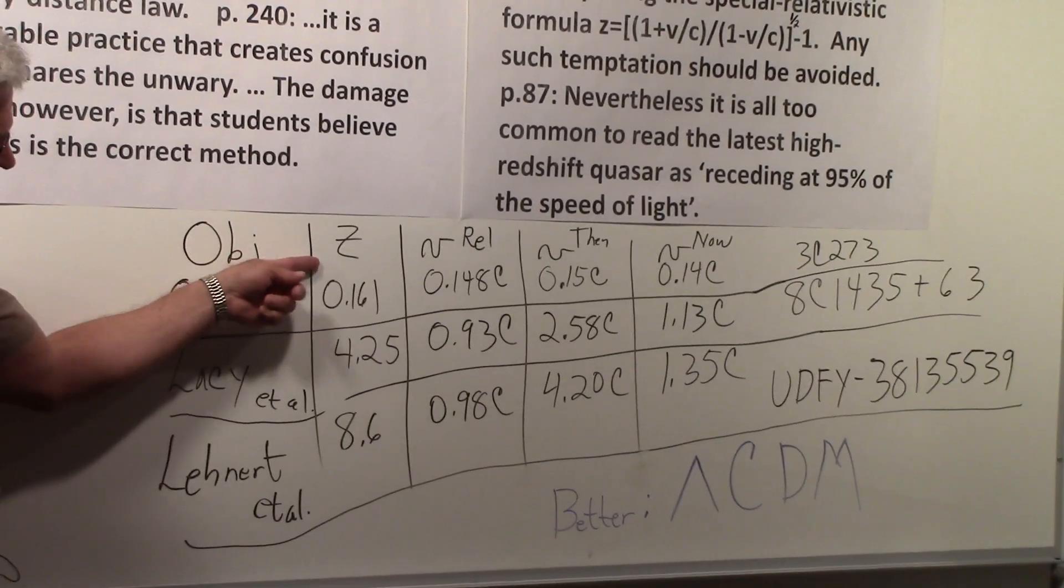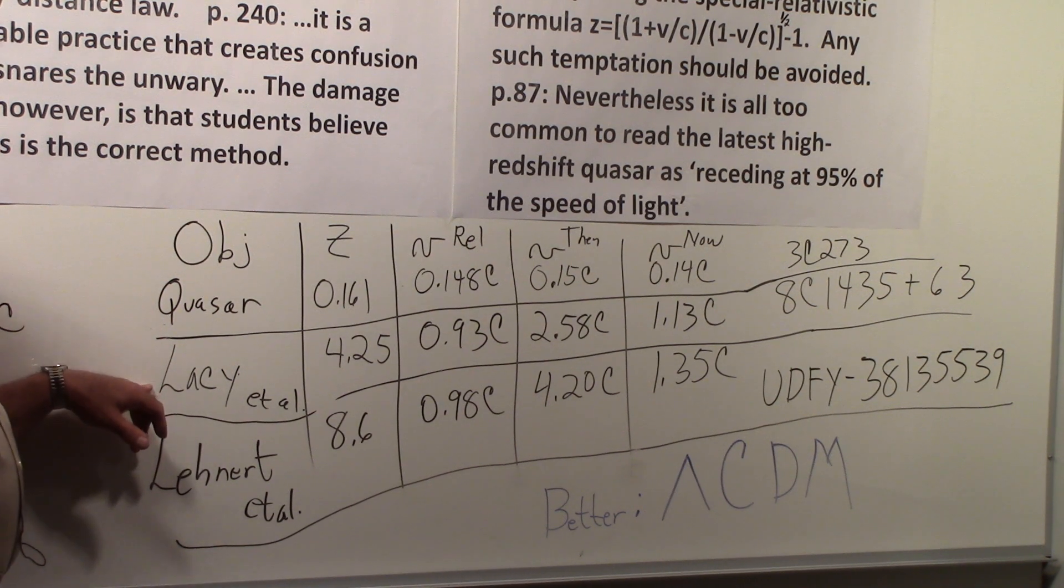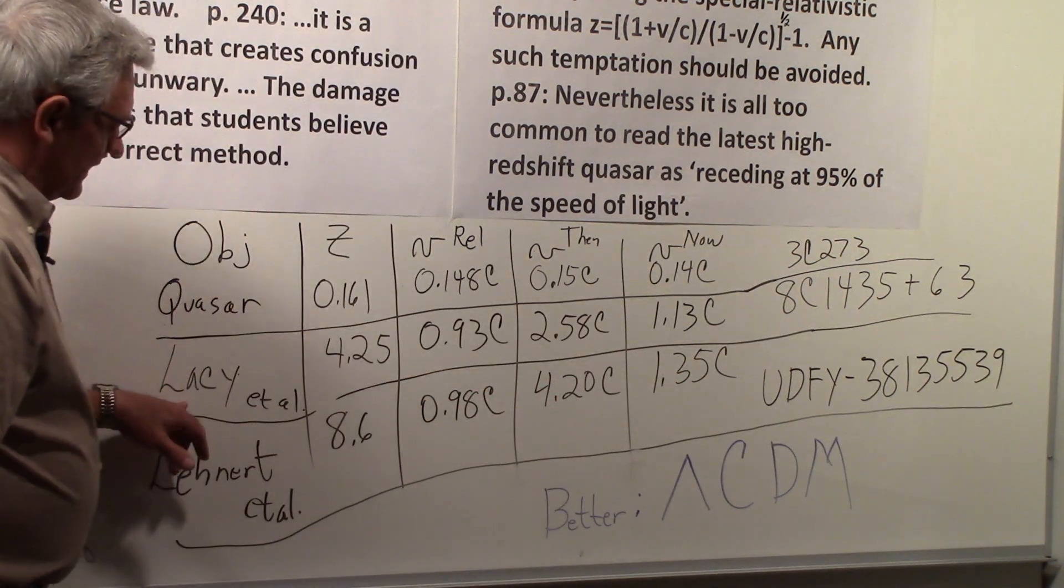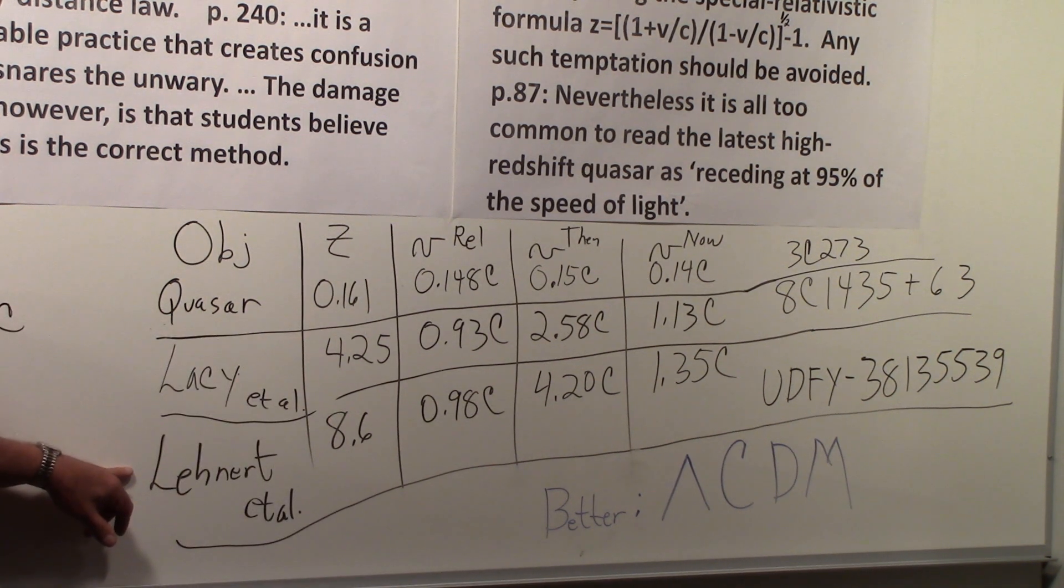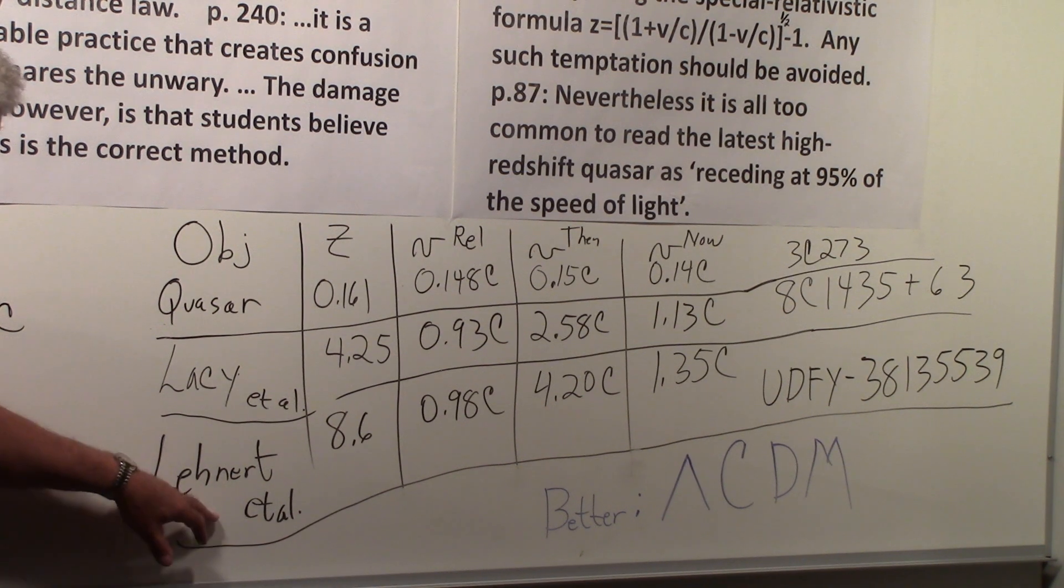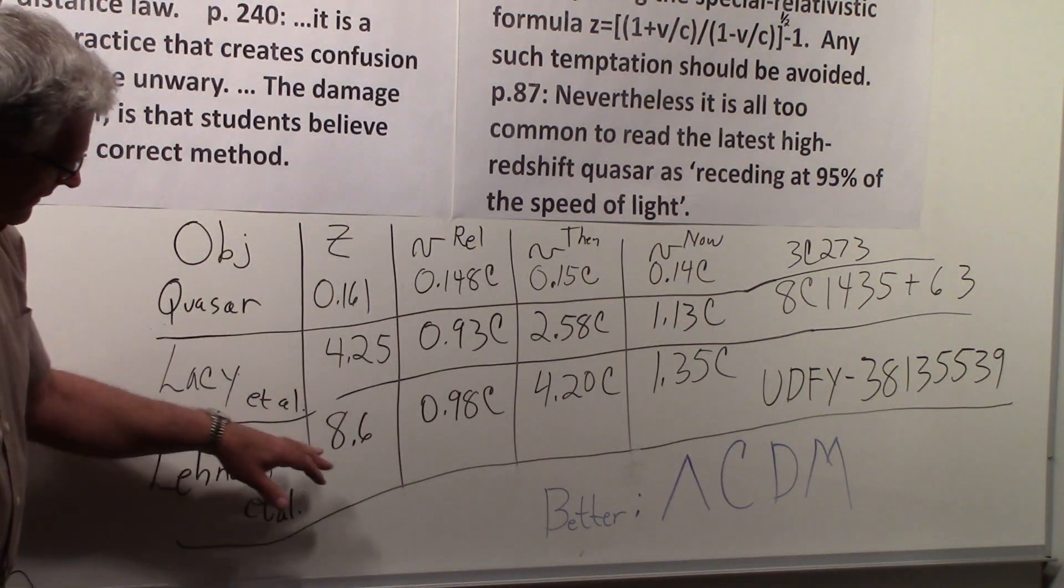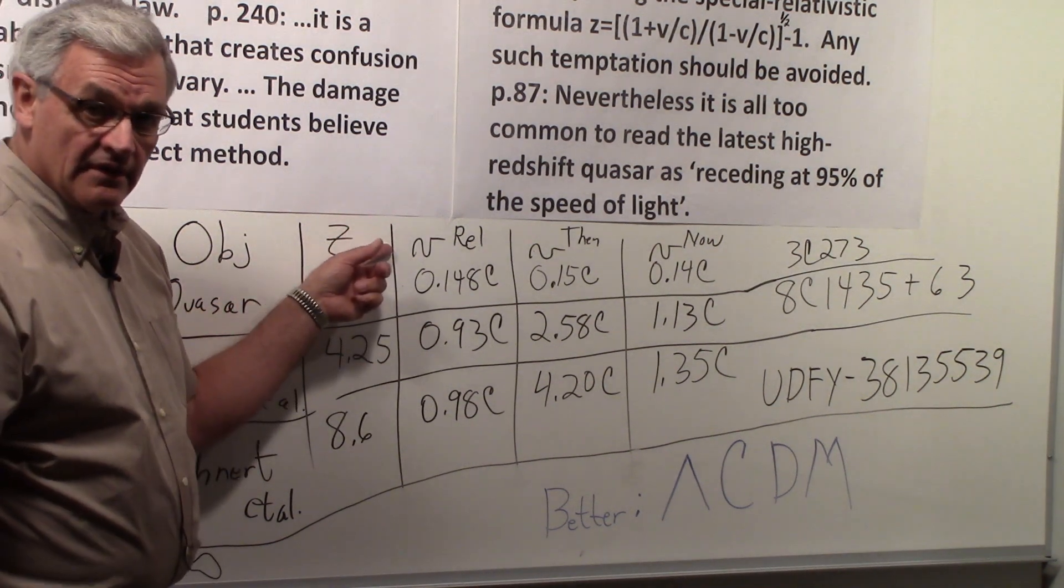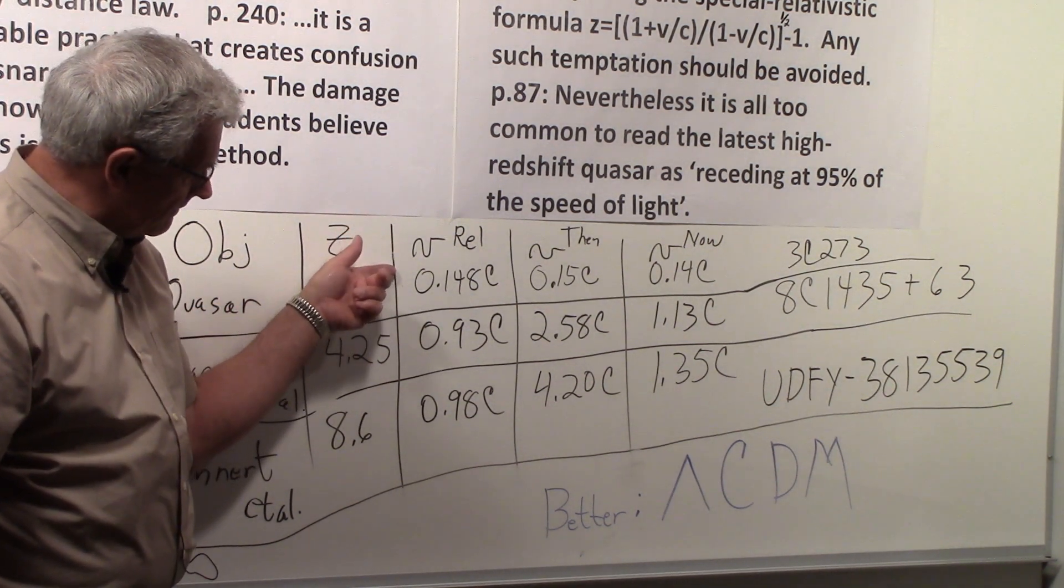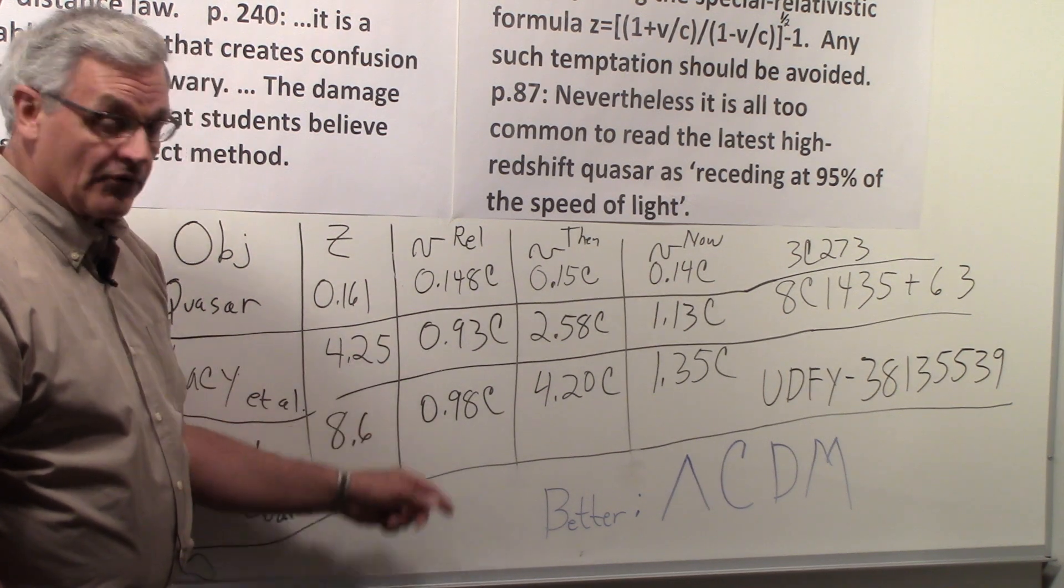So here I listed out three objects with quite different z values: the quasar that we talked about earlier, 3C273, and there is an object with a very long name over here that Lacey and company had looked at that has a z value of 4.25, and there is a study done by Lenart and others on an object that is designated with this name. And what I am showing here is that one has a redshift of 8.6, very very large. So if you figure out the relativistic—if you use the Doppler format to figure out, use the relativistic Doppler format to figure out the velocity—you get 0.148c here, 0.93c here, and 0.98c here.